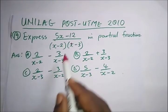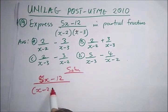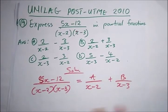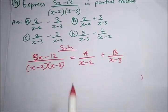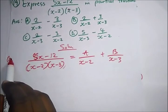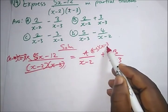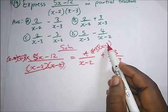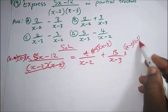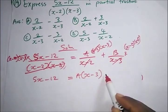The final question says: express (5x − 12)/[(x − 2)(x − 3)] in partial fractions. I haven't treated this topic in detail, but it's part of your JAMB syllabus. We write: A/(x − 2) + B/(x − 3). Multiplying both sides by (x − 2)(x − 3): 5x − 12 = A(x − 3) + B(x − 2).